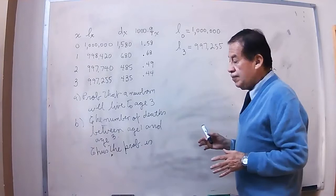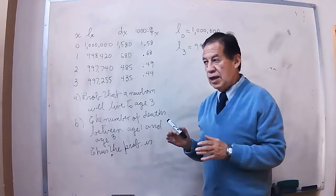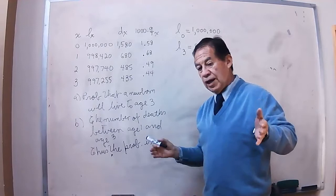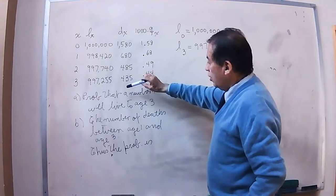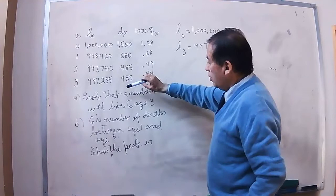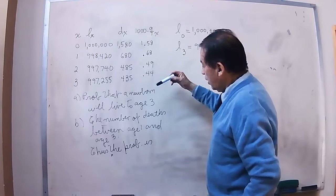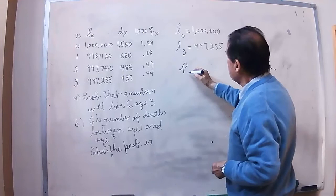At the same time, we have to consider two ideas: the idea of probability of living, or the idea of probability of dying. This letter A will be the probability that this person, a newborn, will live to age 3. In other words, this will be the probability that the person that is 0 age will live until age 3.